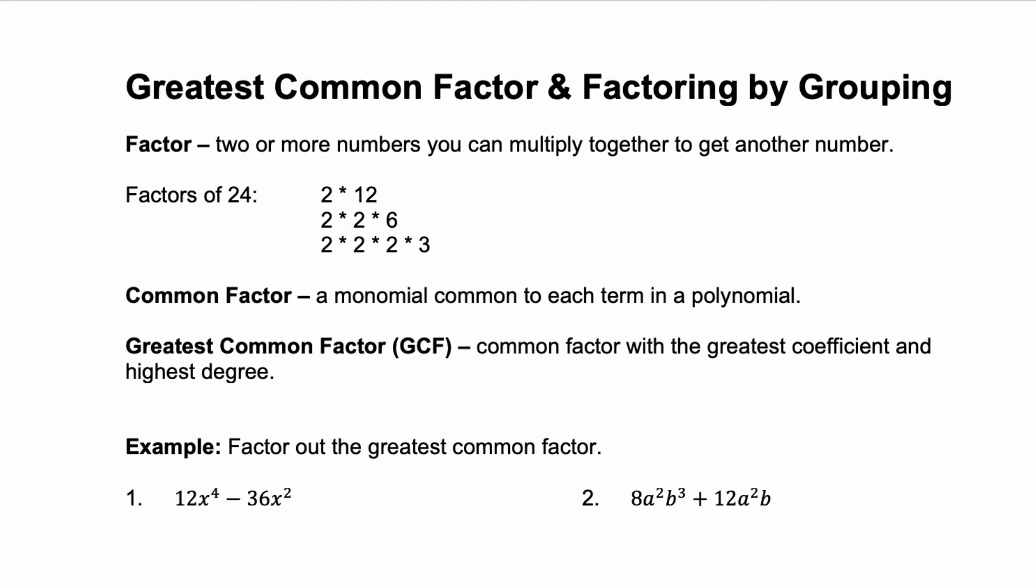First, let's review what a factor is. A factor is when you have two or more numbers that you multiply together in order to get another number. If you look at the factors of 24, you can start with 2 times 12. But notice that 12 isn't prime, so you can factor 12 even further. 12 factors to 2 times 6, so 24 could factor to 2 times 2 times 6.